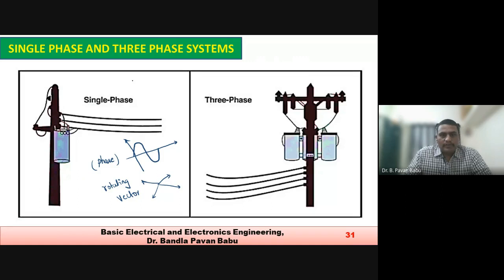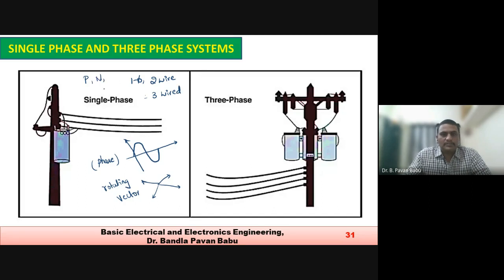Single phase is a two-wire or three-wire system. The two wires are phase and neutral; a three-wire system adds a ground. For three phase, the phases are R, Y, B. A three-phase three-wire system has R, Y, B, while a three-phase four-wire system adds a neutral.